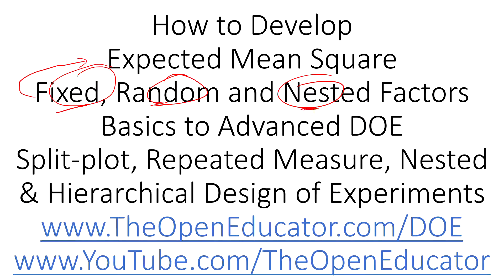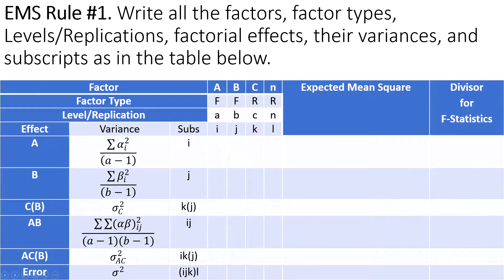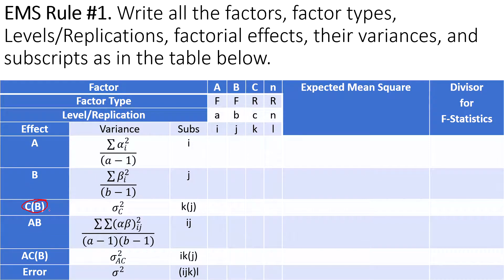The Expected Mean Square for each effect is very simple to develop. In this example, A is fixed, B is fixed, and C is nested in B — written as C(B) — and C is also a random factor. So we have a very mixed situation: fixed, random, and nested. C is nested in B, and C is also random.